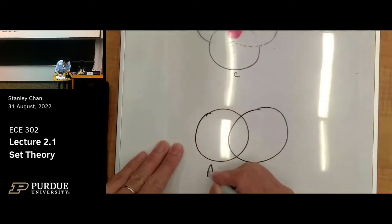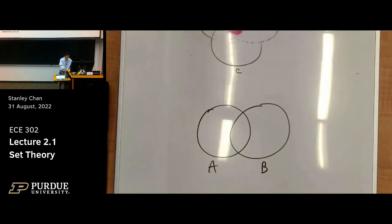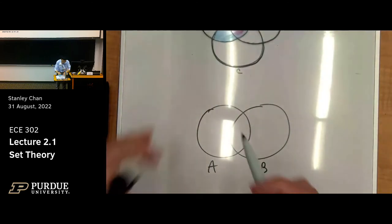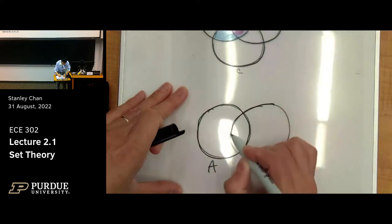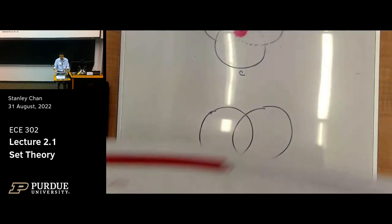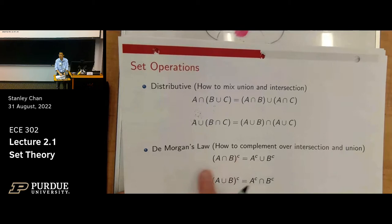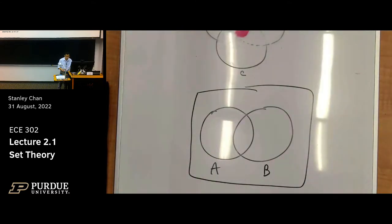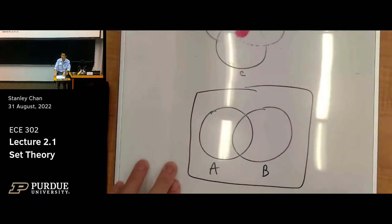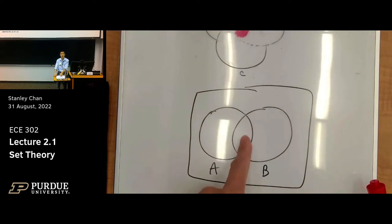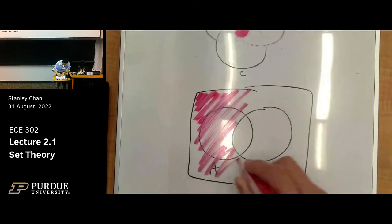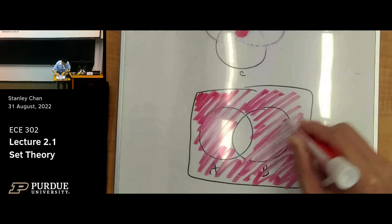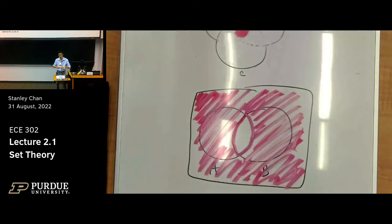To illustrate, let's draw A and B with overlap. For the complement of (A intersect B): the intersection of A and B is the middle region, so its complement is everything outside that intersection — everything else in omega.